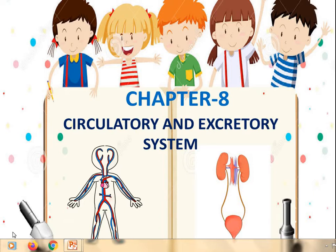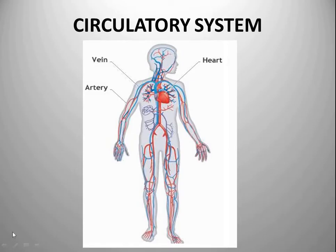Now what do we mean by circulatory system? Let us start with that. As you can see here on the screen, the circulatory system helps to transport substances inside our body. This system consists of three parts — look at the picture on the screen: heart, blood, and blood vessels. These are the parts of the circulatory system.